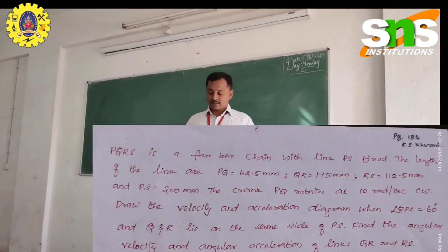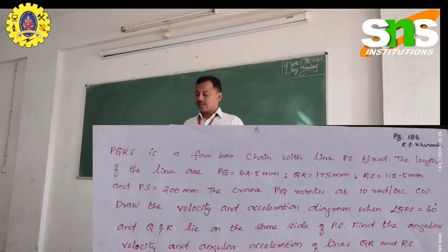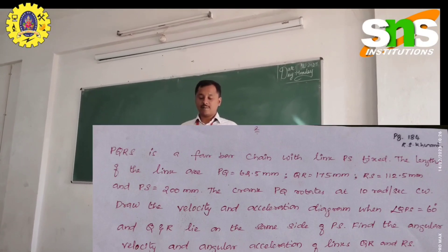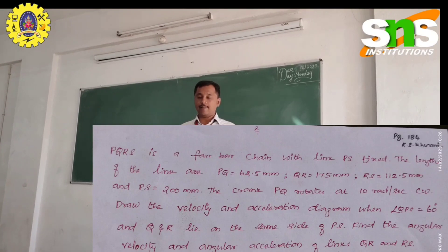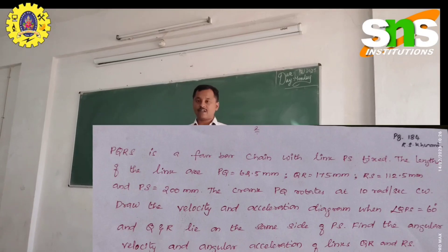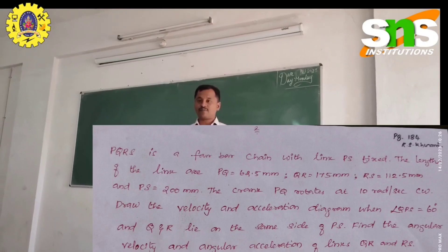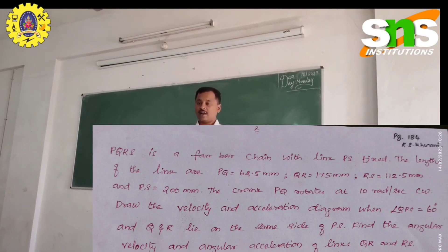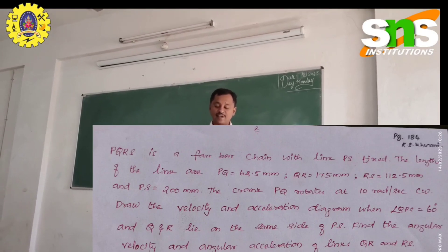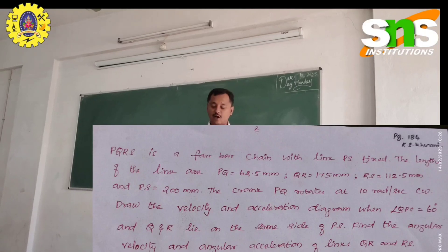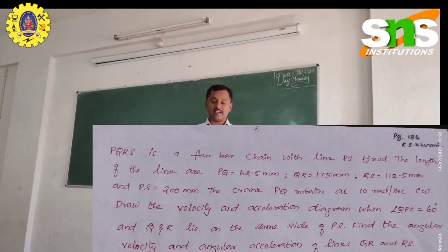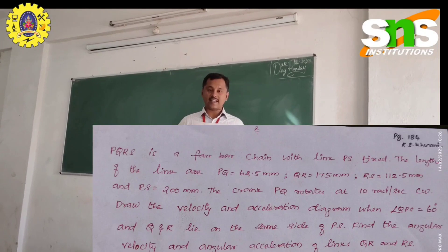I am going to dictate the question, please make a note of it. PQRS is a 4-bar chain with link PS fixed. The lengths of the links are: PQ equal to 62.5 mm, QR equal to 175 mm, RS equal to 112.5 mm, and PS equal to 200 mm. The crank PQ rotates at 10 radians per second in the clockwise direction.